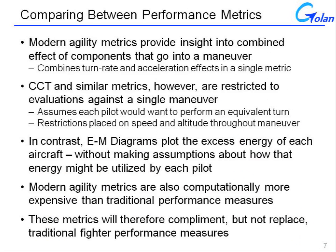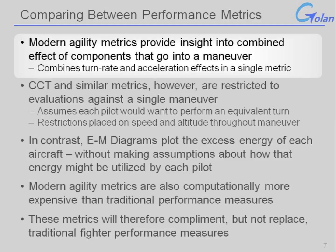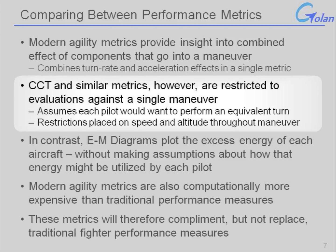Comparing the available performance metrics, the modern agility metrics provide insight into combined effects and components that go into a maneuver — things like turn rate and acceleration, both of which are important. However, they are still restricted to evaluations against a particular maneuver; in the case of combat cycle time, it is typically a 180-degree turn. There is an underlying assumption that the pilot of each aircraft would want to perform that equivalent maneuver, along with restrictions on speed and altitude range throughout the calculation.